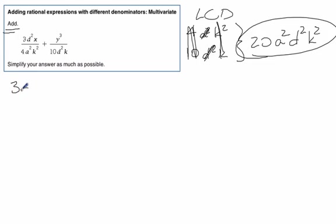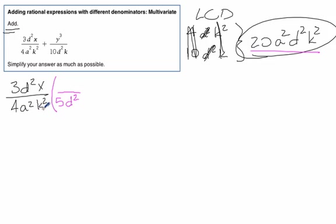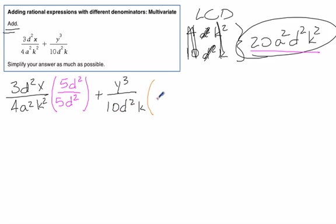Now we've got to change each fraction. We have 3d squared x over 4a squared k squared, and we have to multiply that by something to get 20a squared d squared k squared. We're going to multiply by 5 to get 20. The a squared is already there. We need a d squared. And the k squared is already there. So it's just 5d squared. Next term is y cubed over 10d squared k. We have to multiply by 2 to get 20. We need an a squared. There's already a d squared. And there's one k, so we need one more — giving us 2a squared k.